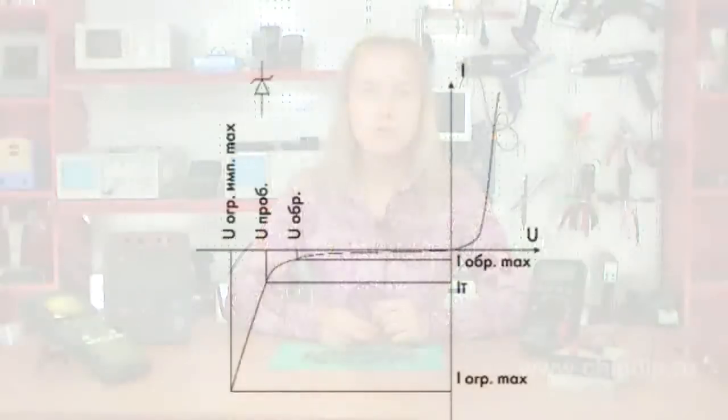TVS diodes have great volt-ampere characteristics within a reversible breakdown region at a small differential resistance value. Therefore, TVS diodes may withstand great currents, up to 100 mA, during a short period of time, generally under 10 ms.